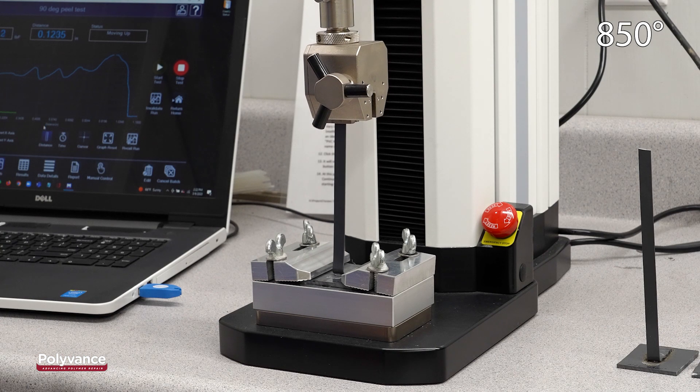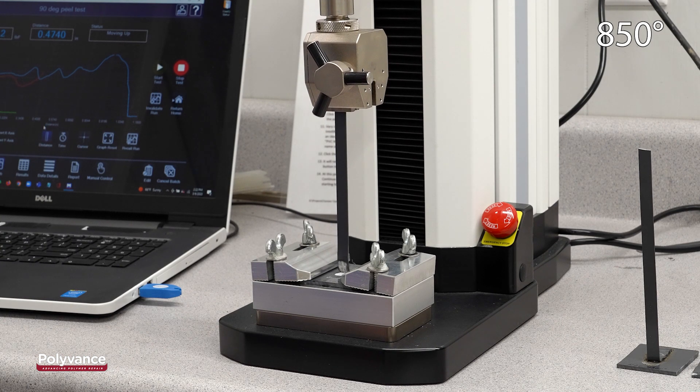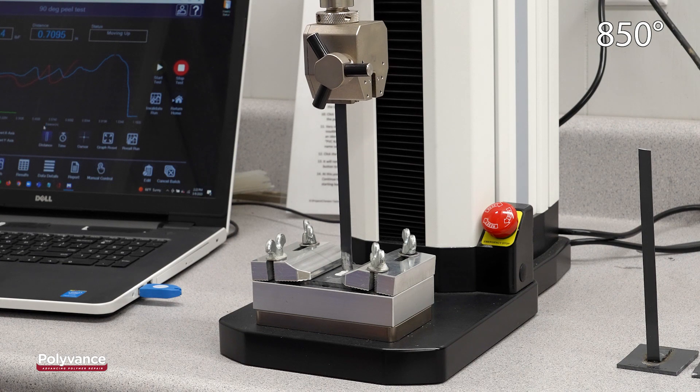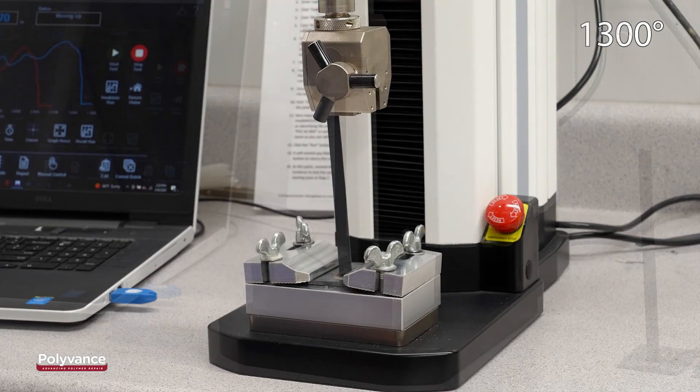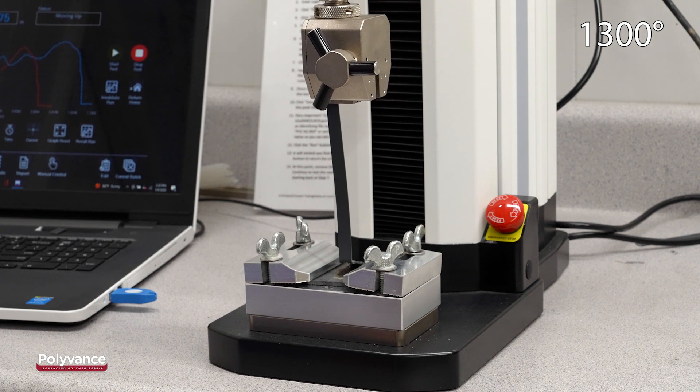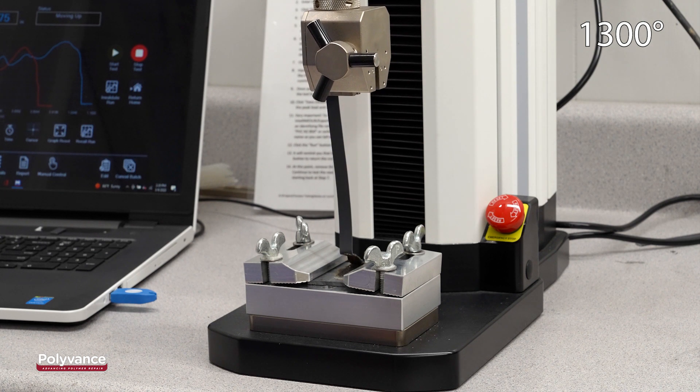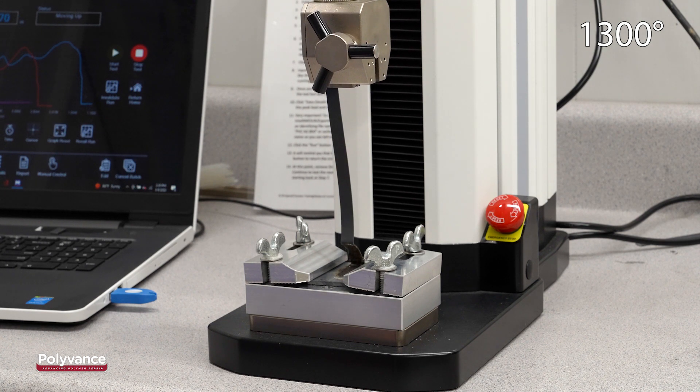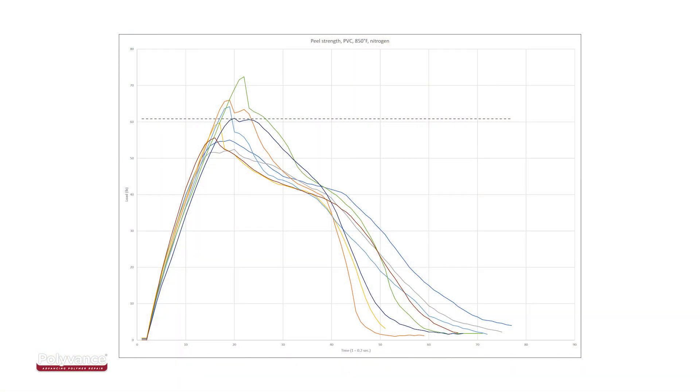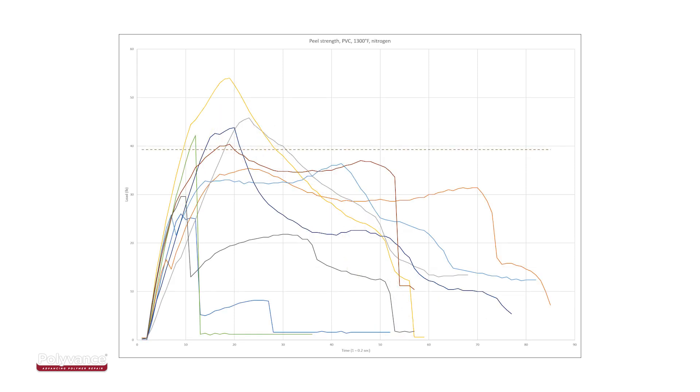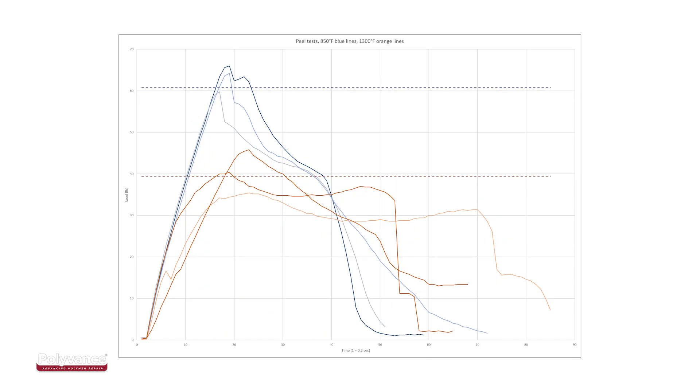We tested the strengths of the PVC welds by pulling up on the free end of the welding rod using a tension tester. We tested nine samples welded at 850 degrees Fahrenheit and nine samples welded at 1300 degrees Fahrenheit, all welded with nitrogen gas. The average peak load for samples welded at 850 degrees was 60.6 pounds versus 39.1 pounds for samples welded at 1300 degrees. The welds performed at 850 degrees were 55% stronger on average than those performed at 1300 degrees.